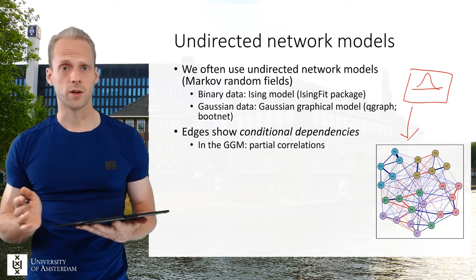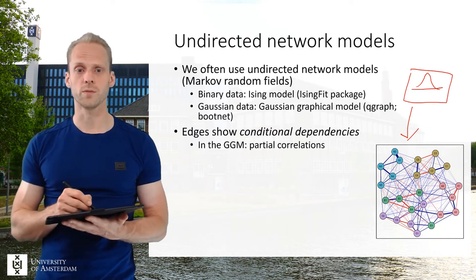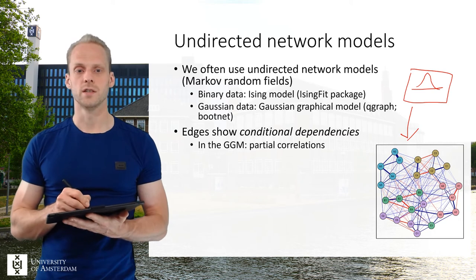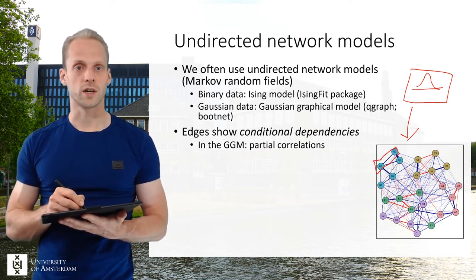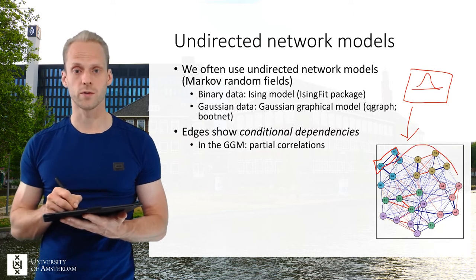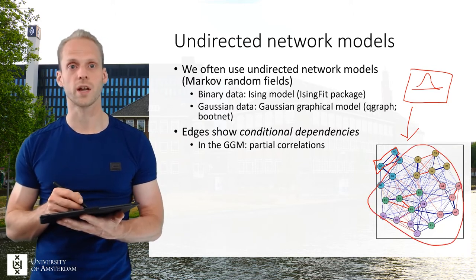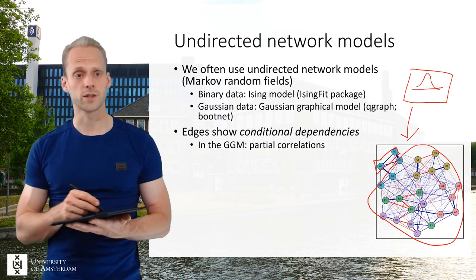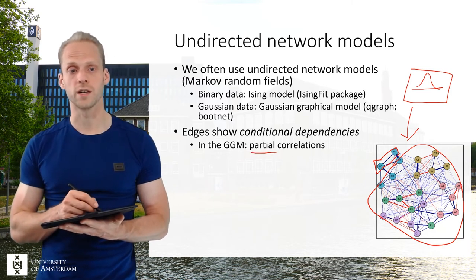The edges in an undirected network model show conditional dependencies. So that means that this edge between two variables shows the association that's left after conditioning or controlling for all other variables in the network. And in the Gaussian case, that's actually a partial correlation.